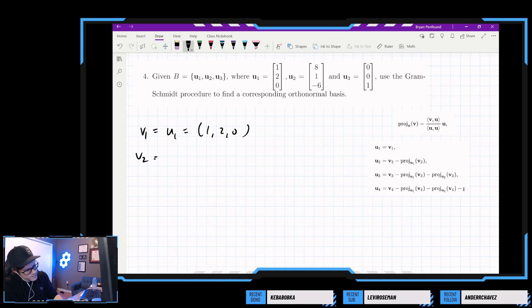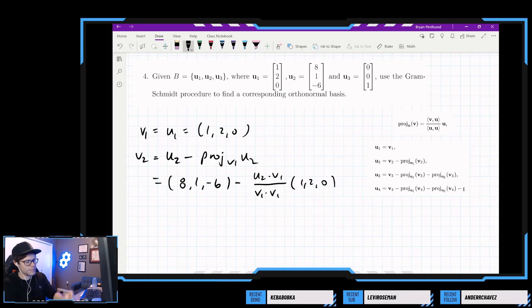And let's take our second vector to be u2 minus the projection of u2 onto v1. Let's see if I can do it correctly this time. So we take 8, 1, negative 6, and we subtract, we need u2 dot v1 over v1 dot v1. And we need to multiply that by v1. Not u2.